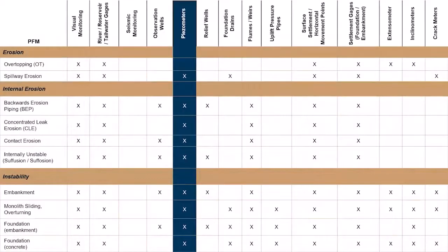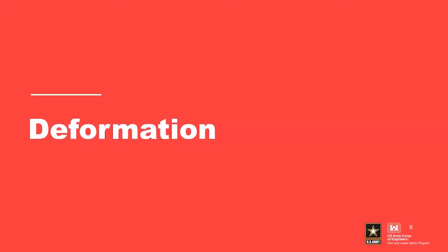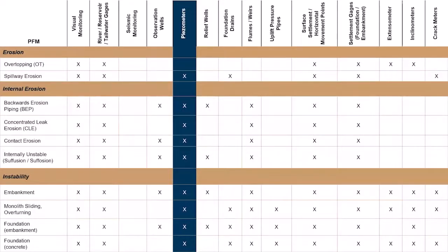This table shows different types of potential failure modes — those related to erosion such as overtopping and spill erosion, those related to internal erosion, and those related to instability. Across the top are different instruments and elements we can employ. Visual monitoring is one of the primary elements in any performance monitoring program. It's the combination of visual monitoring plus instrumented monitoring — one does not go without the other.